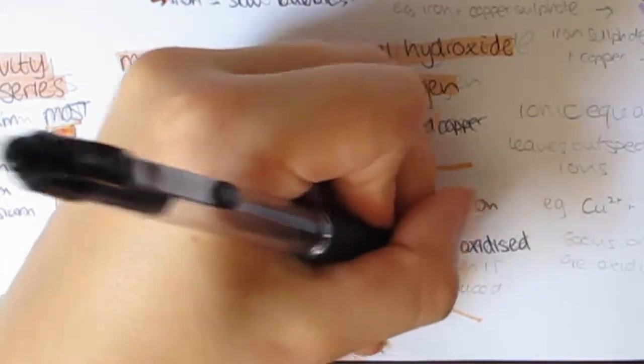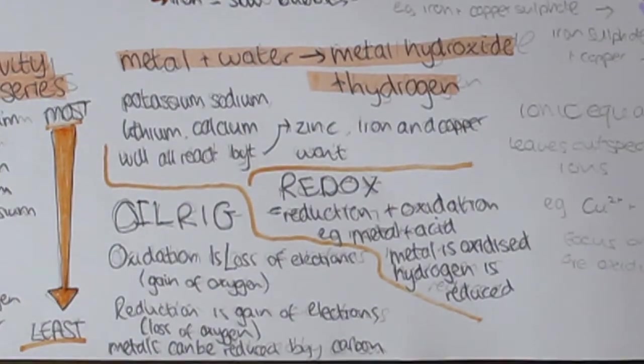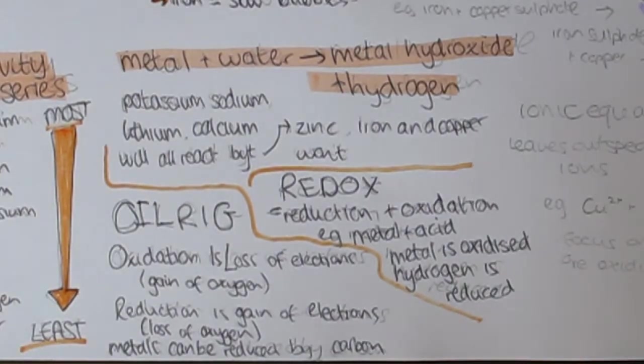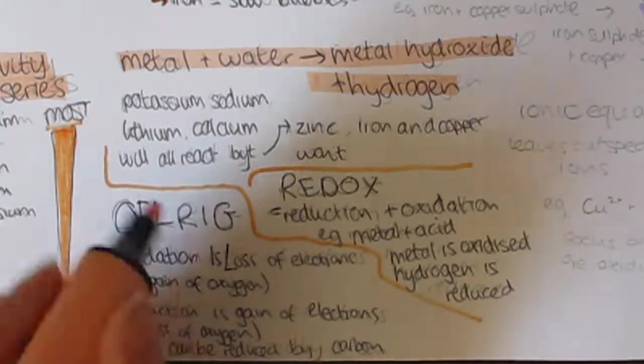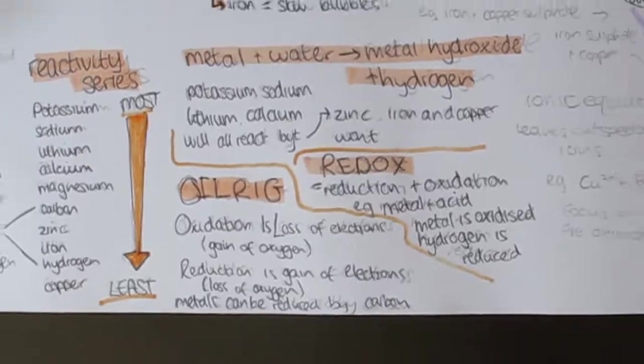Redox and oxidation happen at the same time, hence the name redox. For example, metals reacting with acids: the iron is oxidized and the hydrogen is reduced. This also happens in halogen displacement reactions, for example where chlorine is reduced and bromine is oxidized.